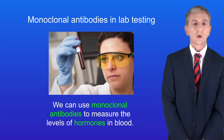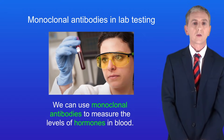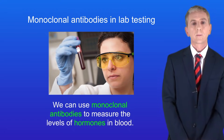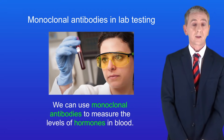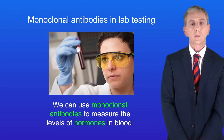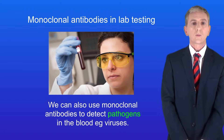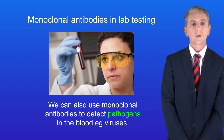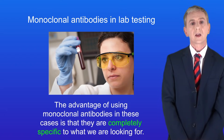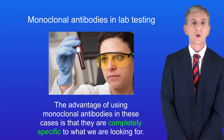Monoclonal antibodies are also used extensively in labs. We can use them to measure the levels of hormones in blood — for example, if a person is tired a lot and lacks energy, that can be caused by low levels of certain hormones. A blood sample is taken and sent off for analysis using monoclonal antibodies. We can also use monoclonal antibodies to detect pathogens in the blood, such as viruses. The advantage is that they are completely specific to what we're looking for.